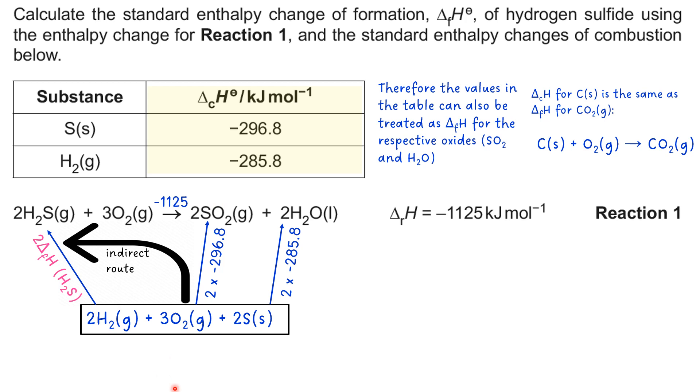Putting the numbers into a calculation, we're clearly making 2 ΔfH of H2S the subject. We can do the dividing to divide it down to 1 times ΔfH in a moment.